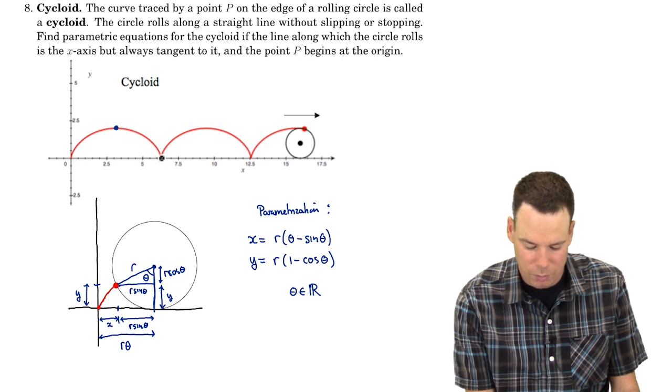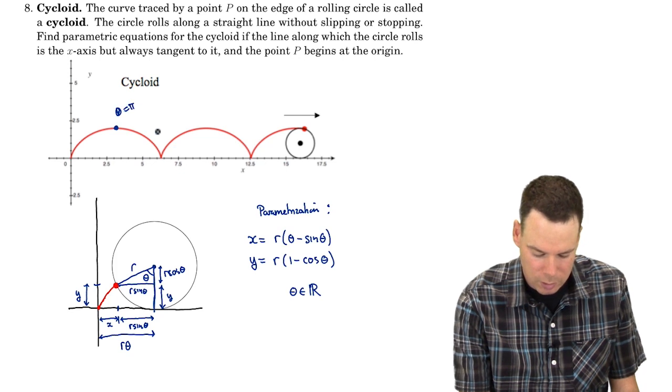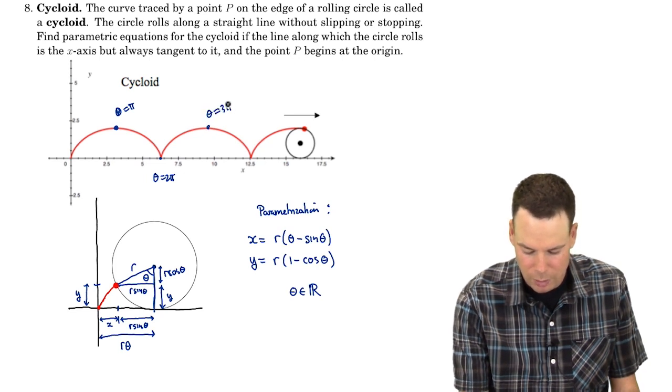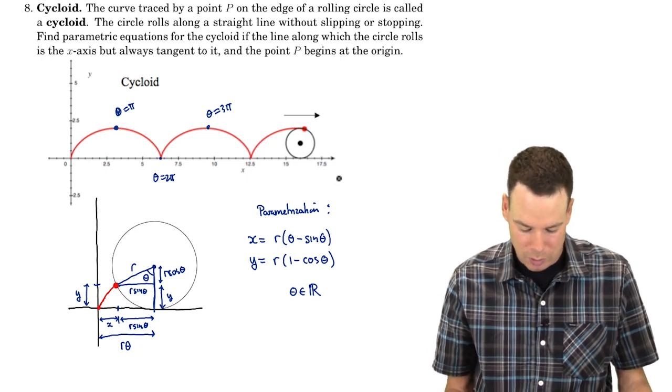The parameter value theta is 2pi. So this is theta equals pi. This one is theta equals 2pi. And this one is theta equals 3pi. Okay, so we're starting to see why the odd multiples of pi came up in our solution.